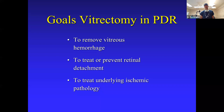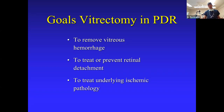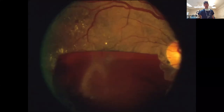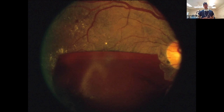The goals of vitrectomy surgery in PDR for vitreous hemorrhage are to remove the vitreous hemorrhage, clear the visual axis, treat or prevent retinal detachment, and treat the underlying ischemic pathology — typically with laser panretinal photocoagulation, just as you would do in the office. Symptoms of vitreous hemorrhage are typically a shower of dots and floaters; vision may decrease to light perception only. This image shows a subhyaloid vitreous hemorrhage — trapped between the retinal surface and the vitreous — blocking the macula; vision in this case is count fingers because the fovea is completely obscured.